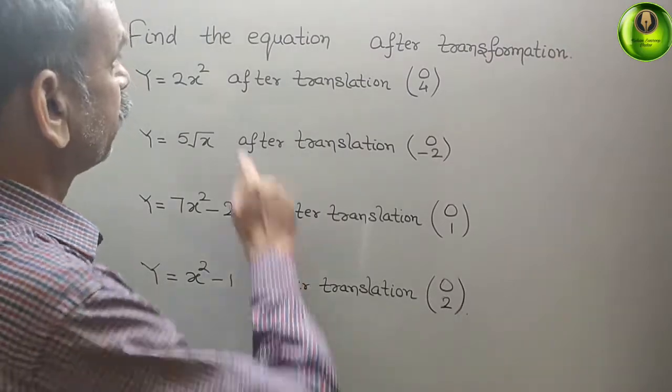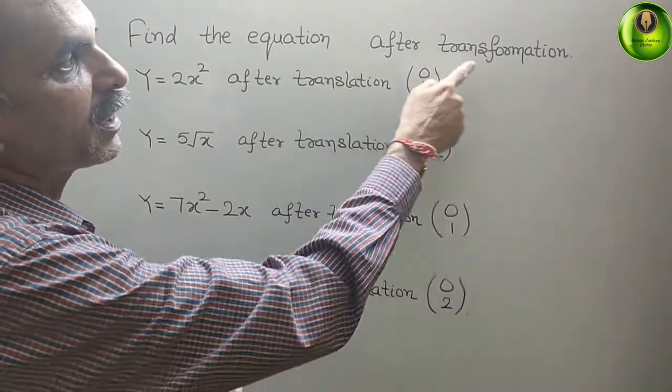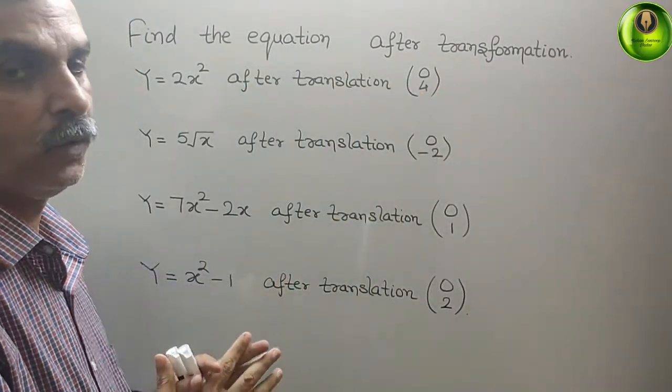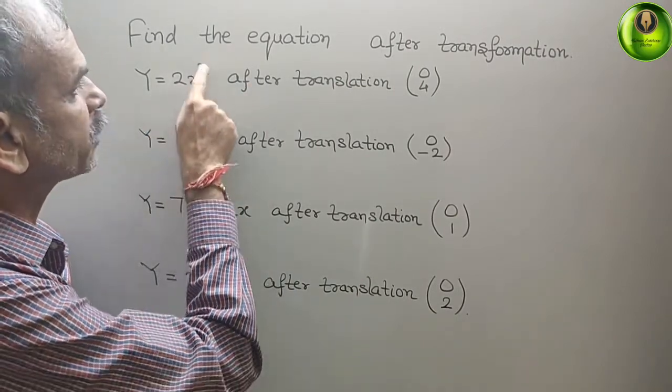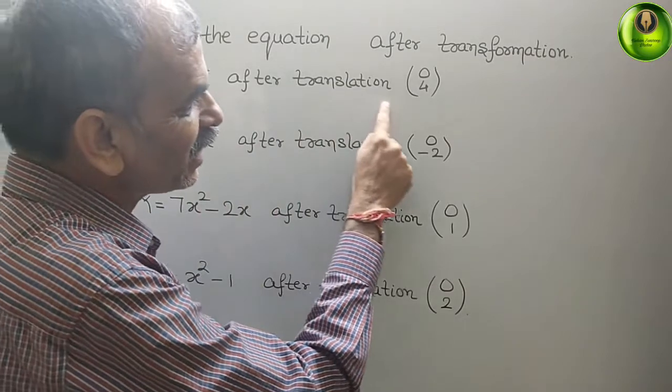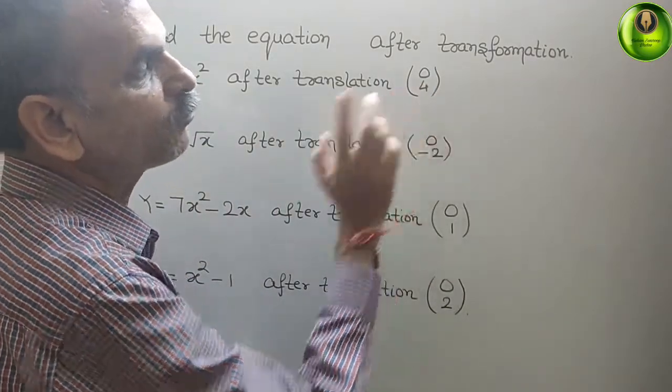Your question is find the equation after transformation. What have they told? They have told y = 2x² after translation (0, 4).